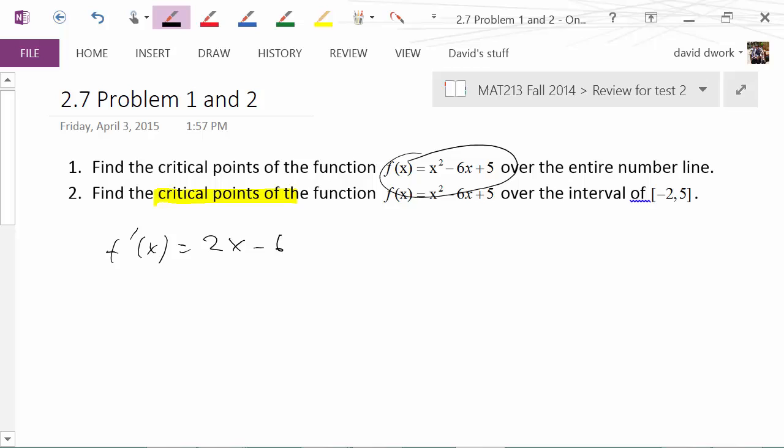2x minus 6. We take that, set it equal to zero, we get 2x minus 6. Therefore I get x equals - we'll add 6, divide by 2 - so that's 3.